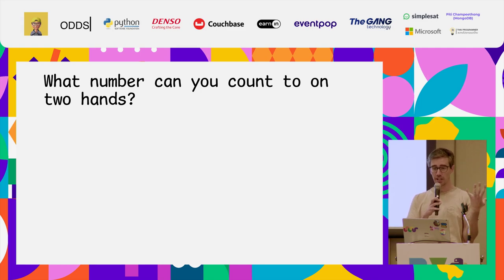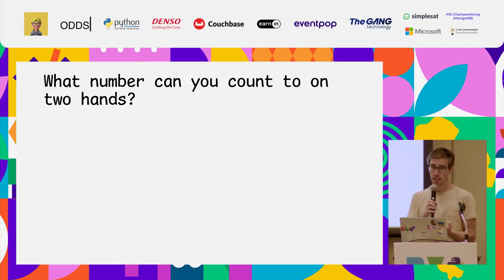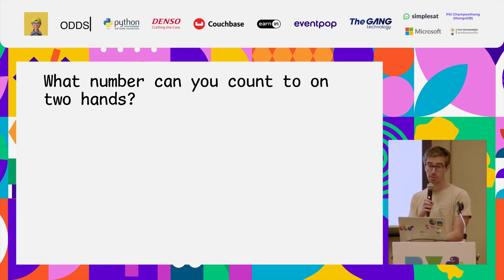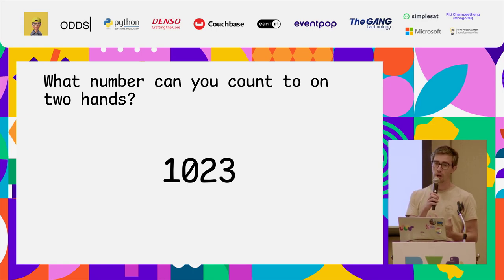...6, 7, 8, 9, 10. This is really limiting because you can only get to 10. My suggestion is that we teach children binary, because using binary encoding we can teach them to count to 1,023 on two hands.